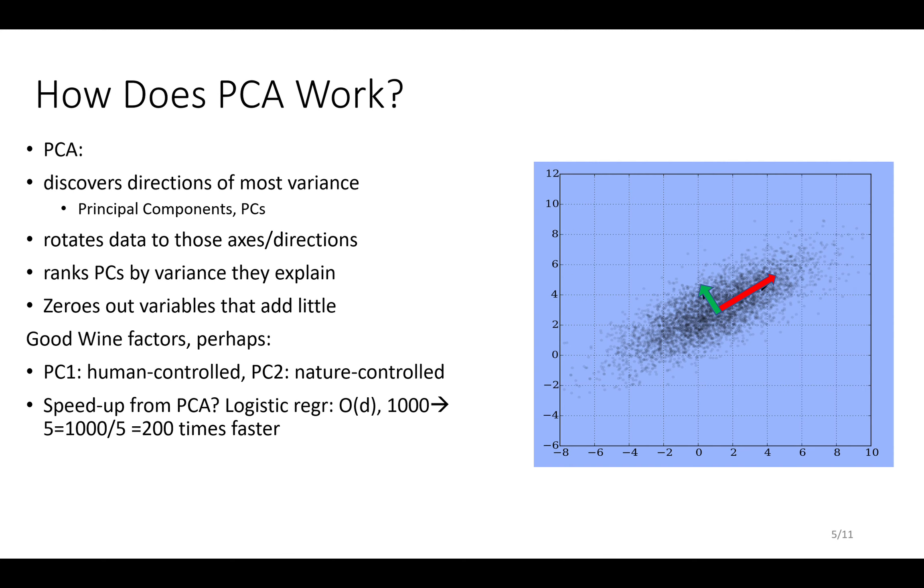How does it work? It discovers the direction of the most variance. If you consider this dataset here, we've got these two axes that we're currently looking at, and those probably make sense in the real world. They're probably things like soil pH or temperature. Unfortunately, they don't make much sense in the data space. What seems to make more sense is the spread of the data.